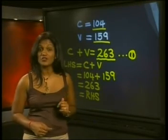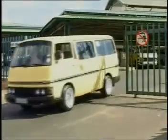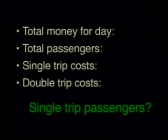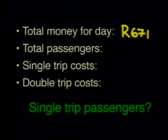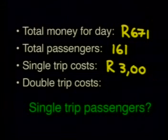Now let's use the same approach in the next problem. A taxi business in Johannesburg charges three rand for a single trip into town and five rand for a double trip. We spoke to a taxi driver after a busy day — he told us he had 161 passengers that day and that he had made 671 rands. The business needs to plan for the rest of the month but has not kept records of how many passengers paid for a single trip and how many paid for a double trip. A single trip costs three rand and a double trip costs five rand.